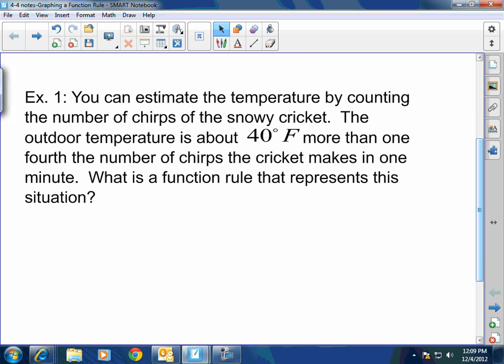Now, let's go ahead. Today we're just going to write equations. That's all we're going to do. You can estimate the temperature by counting the number of chirps of the snowy cricket. The outdoor temperature is about 40 degrees Fahrenheit more than one-fourth the number of chirps the cricket makes in one minute. What is a function rule that represents this situation? First thing you're always going to do, my friends, is determine the independent and the dependent variables.